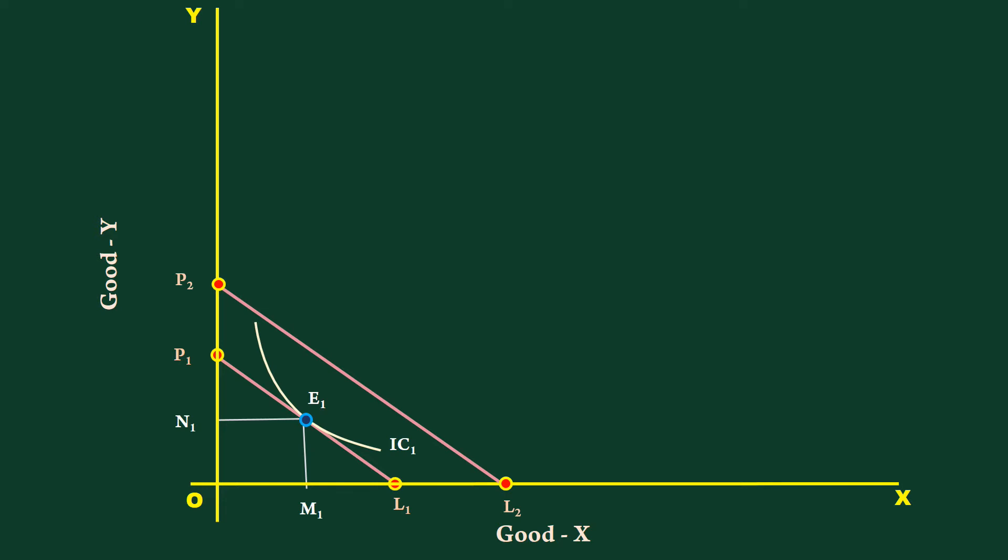The consumer is in equilibrium at E2 where IC2 is tangent to the price line P2L2. He buys M2 units of good X, which is greater than M1. He buys N2 units of good Y, which is also greater than N1.